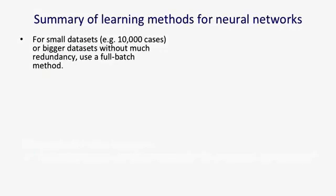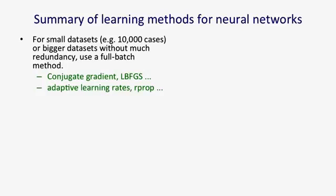A summary of the learning methods for neural networks: if you've got a small data set — say 10,000 cases or less — or a big data set without much redundancy, you should consider using a full batch method. There are full batch methods adapted from the optimization literature, like non-linear conjugate gradient, LBFGS, or Levenberg-Marquardt. One advantage of using those methods is they typically come with a package, and when you report the results in your paper you just have to say which package you used. Alternatively, you could use adaptive learning rates or RProp, which are both essentially full batch methods developed for neural networks.